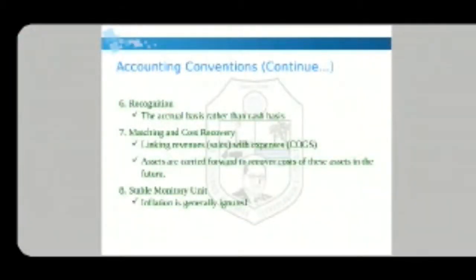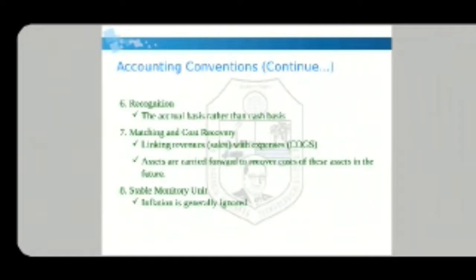The next convention is recognition: the accrual basis is used rather than a cash basis, as we discussed in the last lecture. Matching and cost recovery link revenues with expenses, and assets are carried forward to recover their cost in the future. Finally, the stable monetary unit convention means inflation is generally ignored in accounting — inflation meaning the increasing price of products.